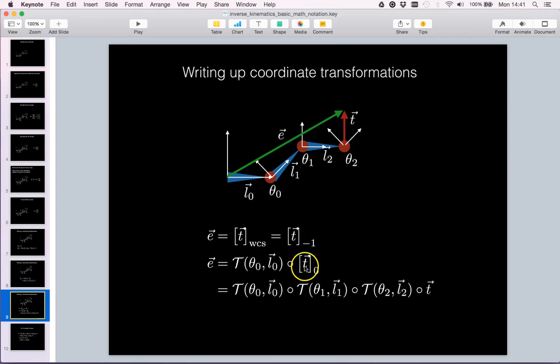So now we take the tooltip vector with respect to the 0 link frame and apply the transformation of link 0 to get the end effector vector in the world coordinate system.